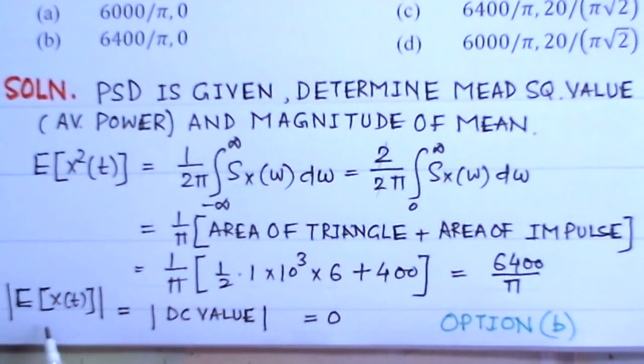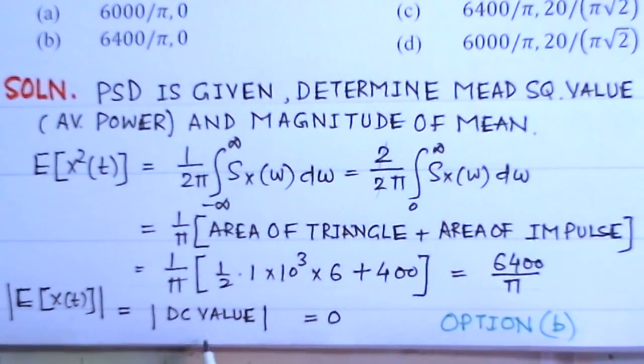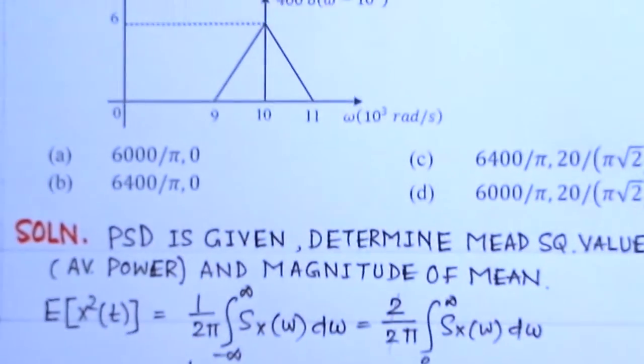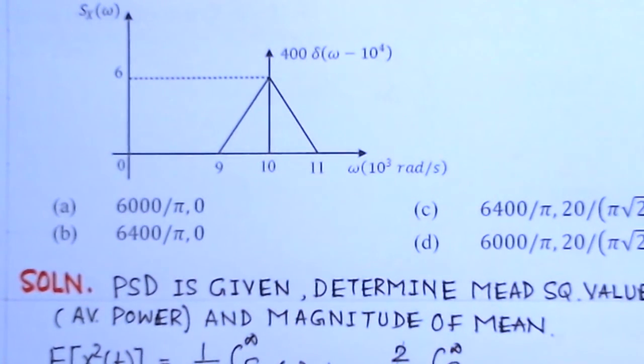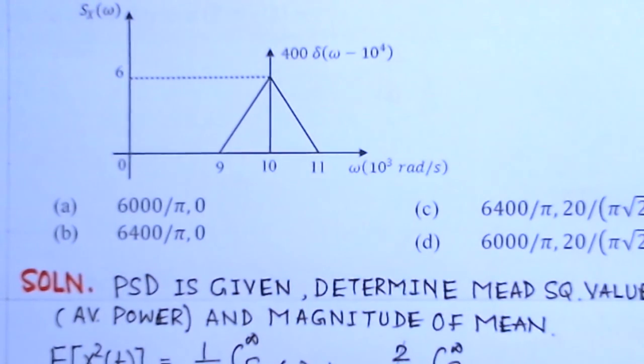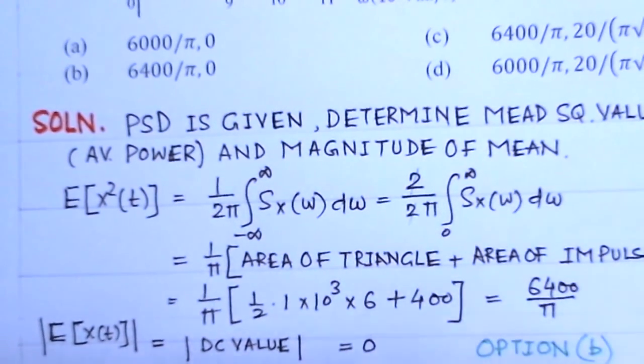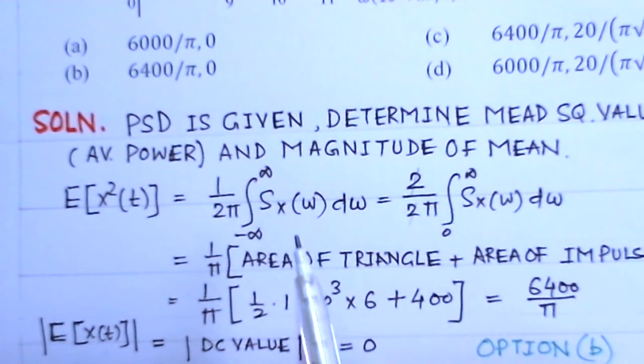We have to find E[X(t)], the mean value and the magnitude of the mean. The mean value is basically the DC value. If you see near omega equals 0, there is no DC value of this signal.